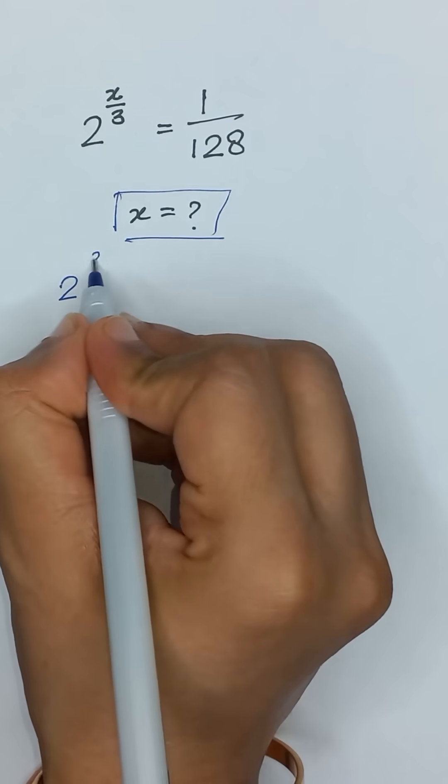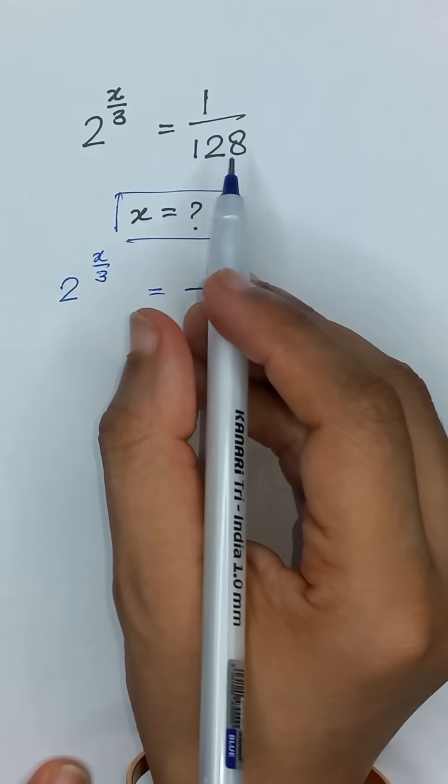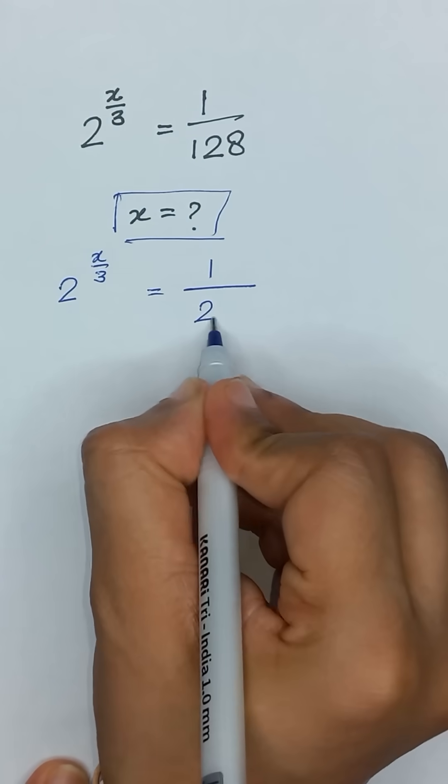So 2 to the power x divided by 3 is equal to 1 divided by 128, which is the same as 1 divided by 2 to the power 7.